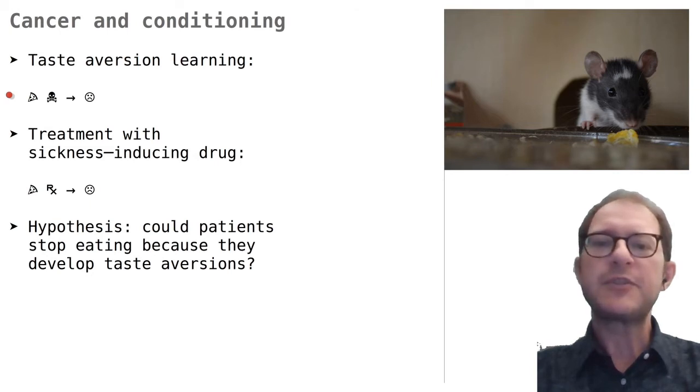In taste aversion learning, we let the animal eat something and then give a mild poison. Similarly, the cancer patient could eat something before going to the hospital for treatment, then receive the drug and get sick. Throughout these lessons, the drugs are indicated by the prescription sign. This is to distinguish them from generic poisons.